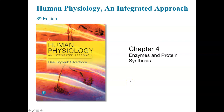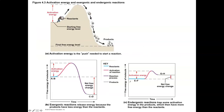Hello everyone, Mr. Linder here. Let's talk about enzymes. Enzymes are proteins that speed up chemical reactions. During the reaction, the enzyme is not changed in any way, nor does it change the reaction in any way. Enzymes are referred to simply as catalysts. Enzymes take the reactants and proceed the reaction towards the products, speeding up the reaction by lowering the activation energy.